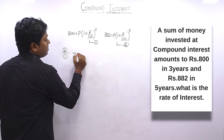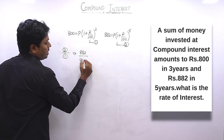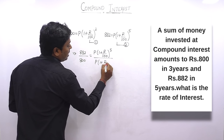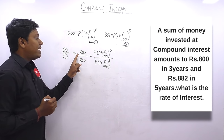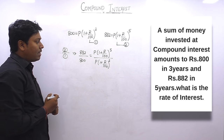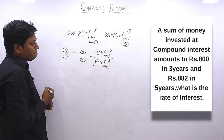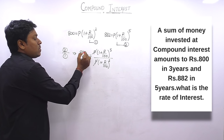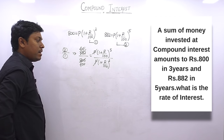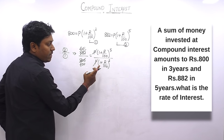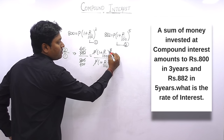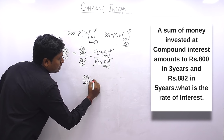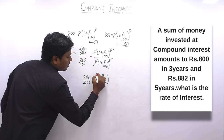Dividing gives 882/800 = [P × (1 + r/100)⁵] / [P × (1 + r/100)³]. Cancel P and P. Simplifying 882/800 by dividing both by 2 gives 441/400. Applying aᵐ ÷ aⁿ = aᵐ⁻ⁿ: power 5 minus power 3 equals power 2. So 441/400 = (1 + r/100)².